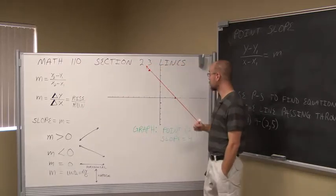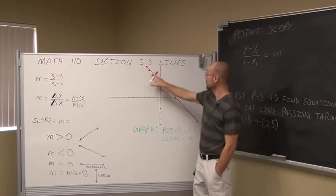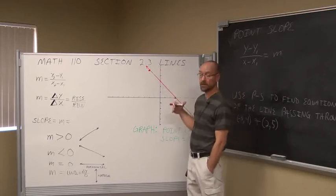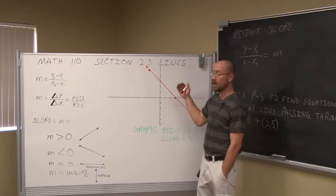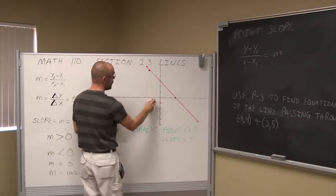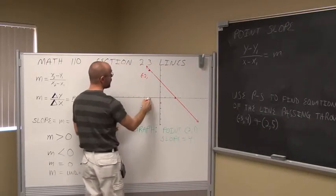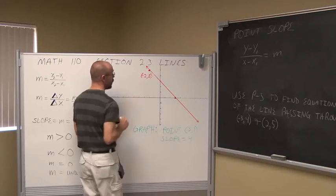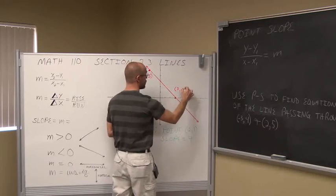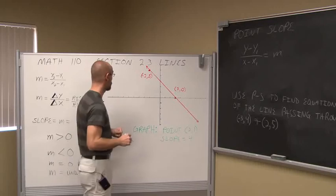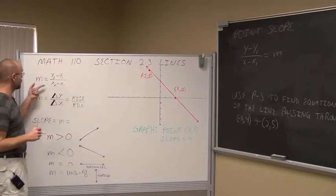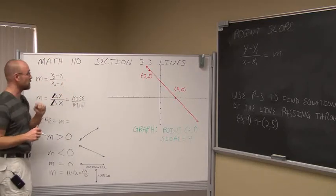Looking at this graph of the line in red, we can see that there are two points denoted. We can find the slant or steepness of this line and define it as slope — the change in y over the change in x. Looking at these points, this point here is negative 2 in x and positive 5 in y. This point here is positive 3 in x and 0 in y — it's right on the x-axis. To find the slope, we can use any variation of this formula, preferably the slope formula, using those two denoted points.